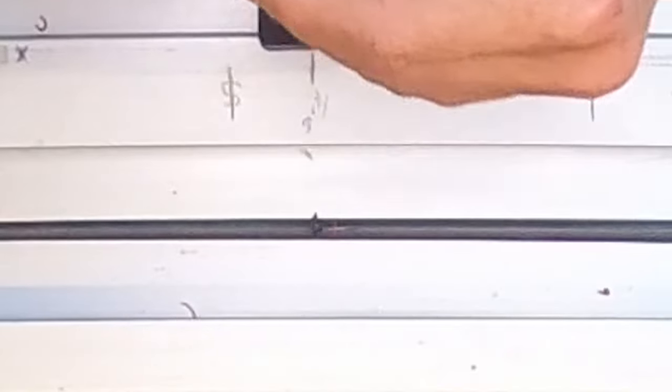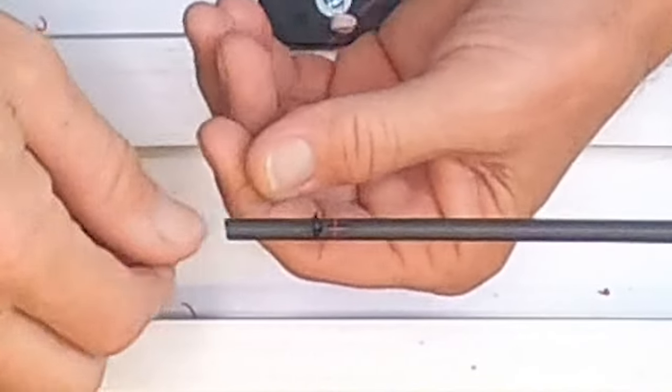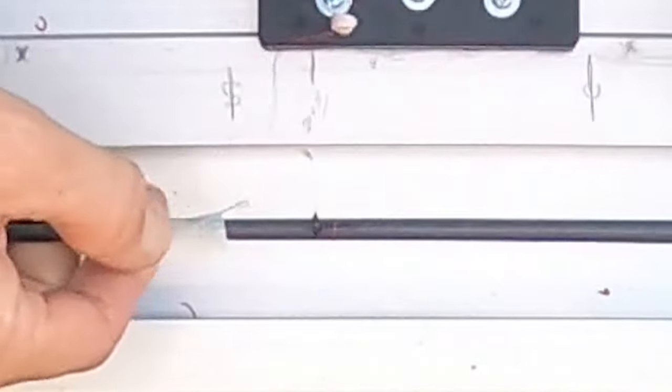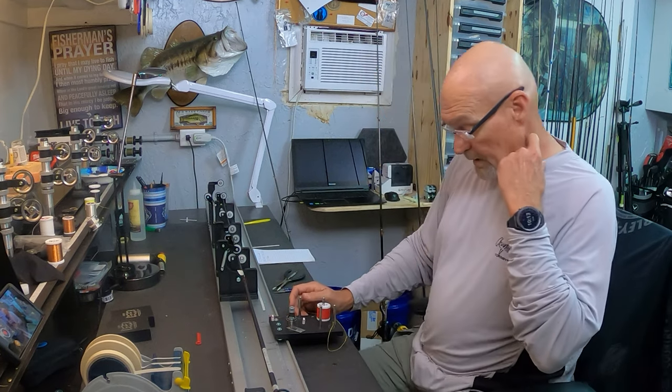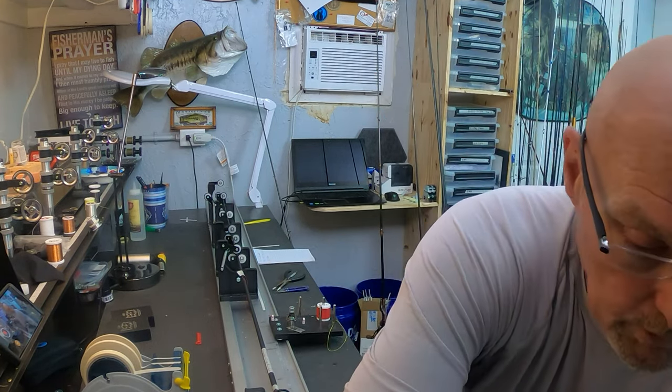So here we go. I'm going to do this wrap with the technique of just taping off on the back side. I've shown you guys several ways to do this, but I'm going to tape this off on the high side of the blank. I'm going to put my power wrapper in wrap mode because I forgot to do that.